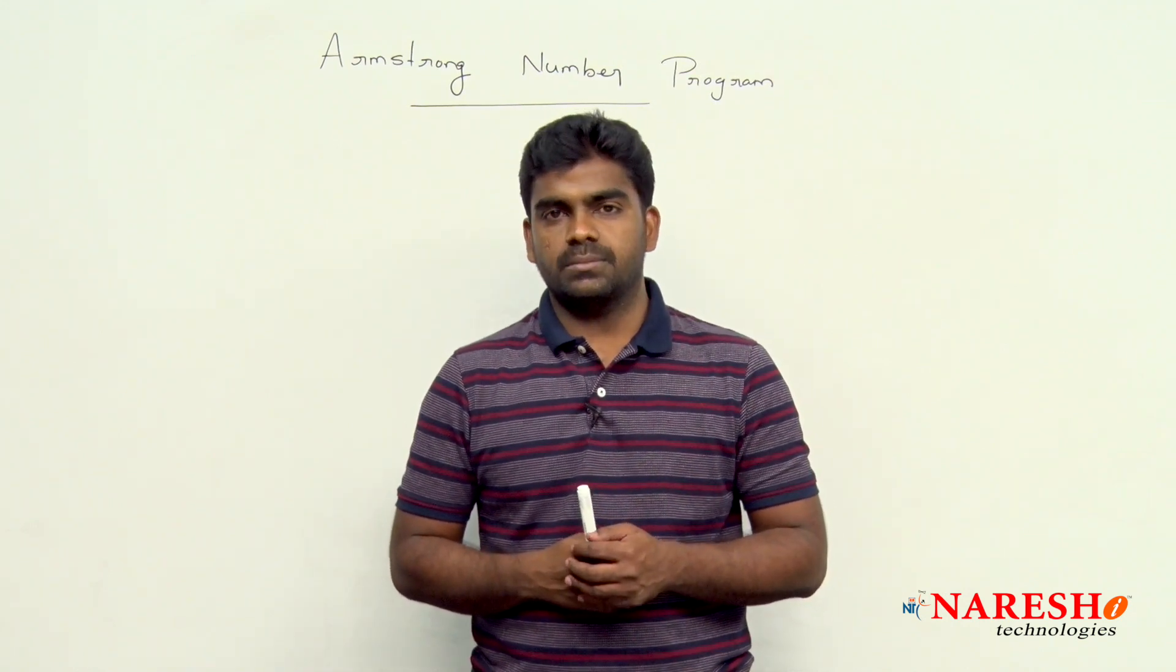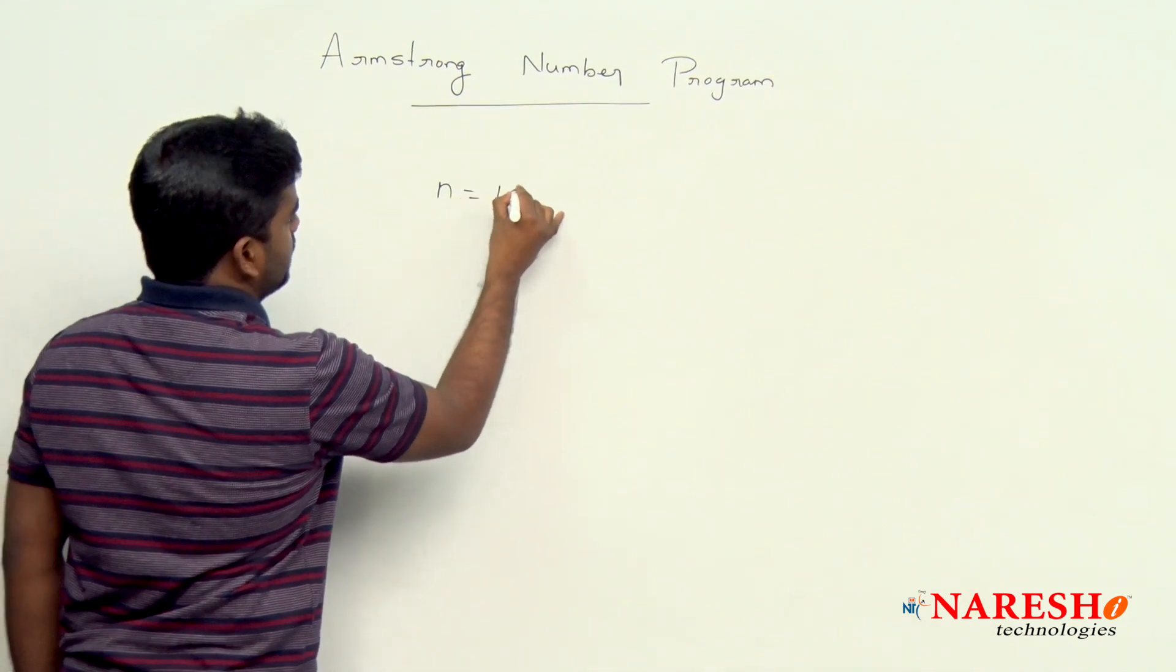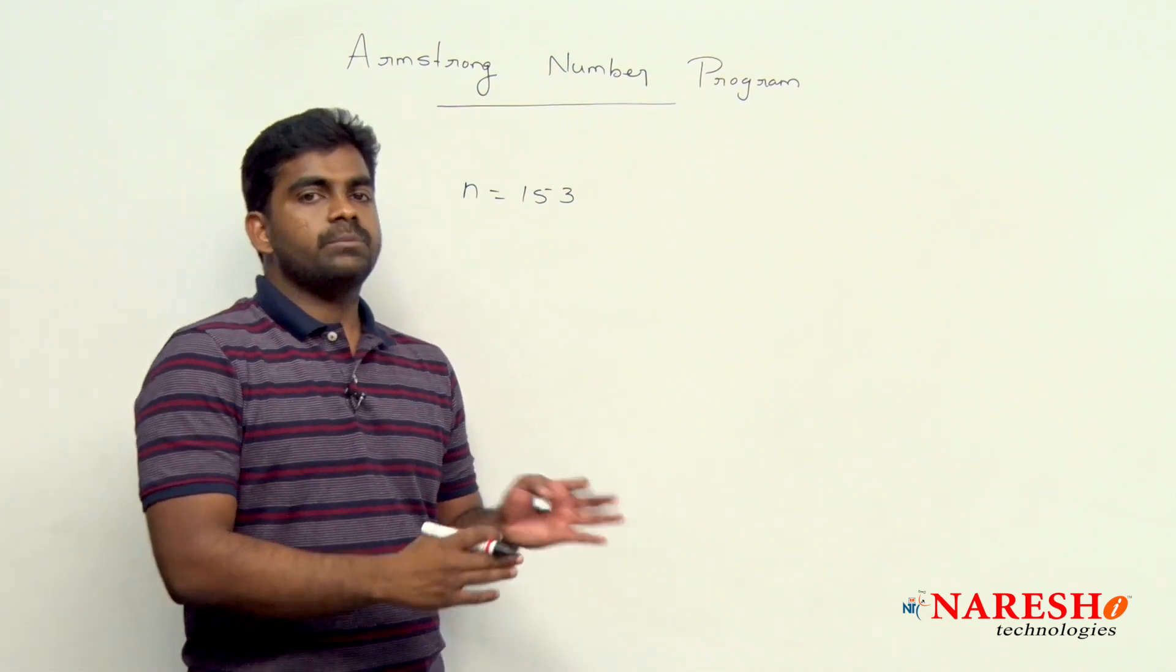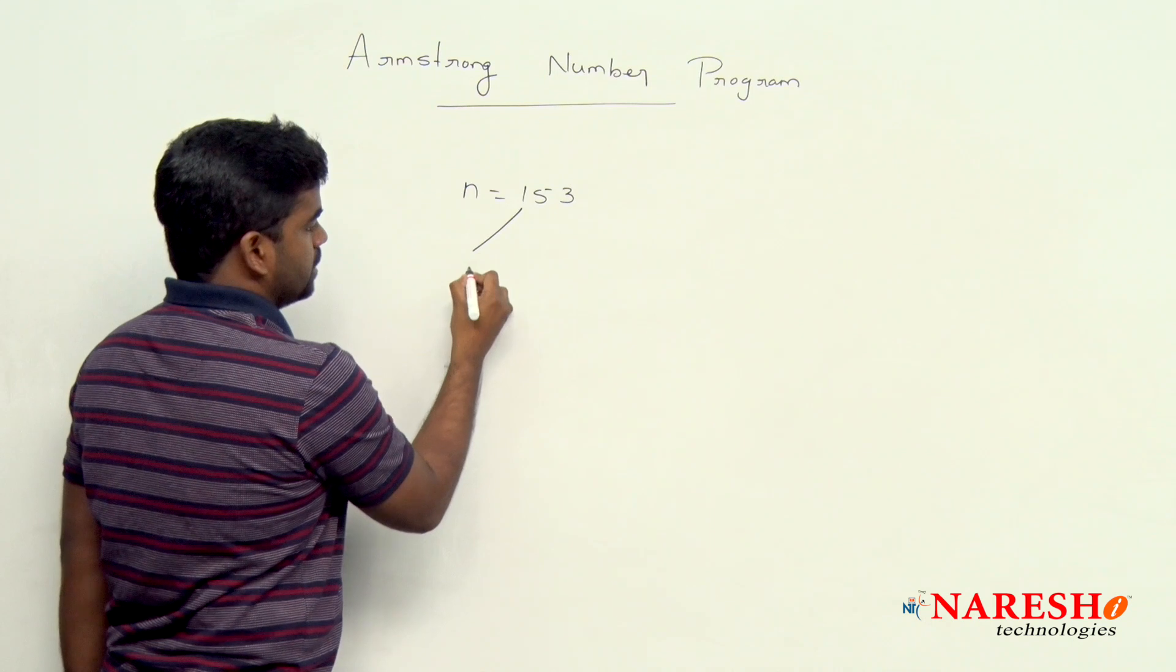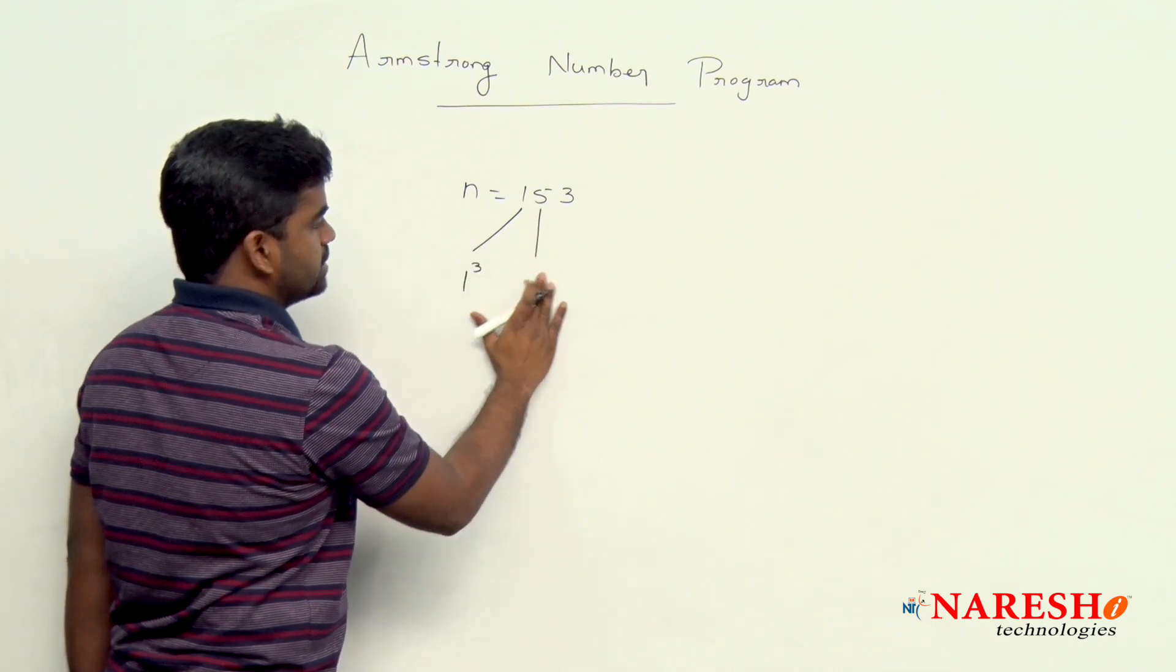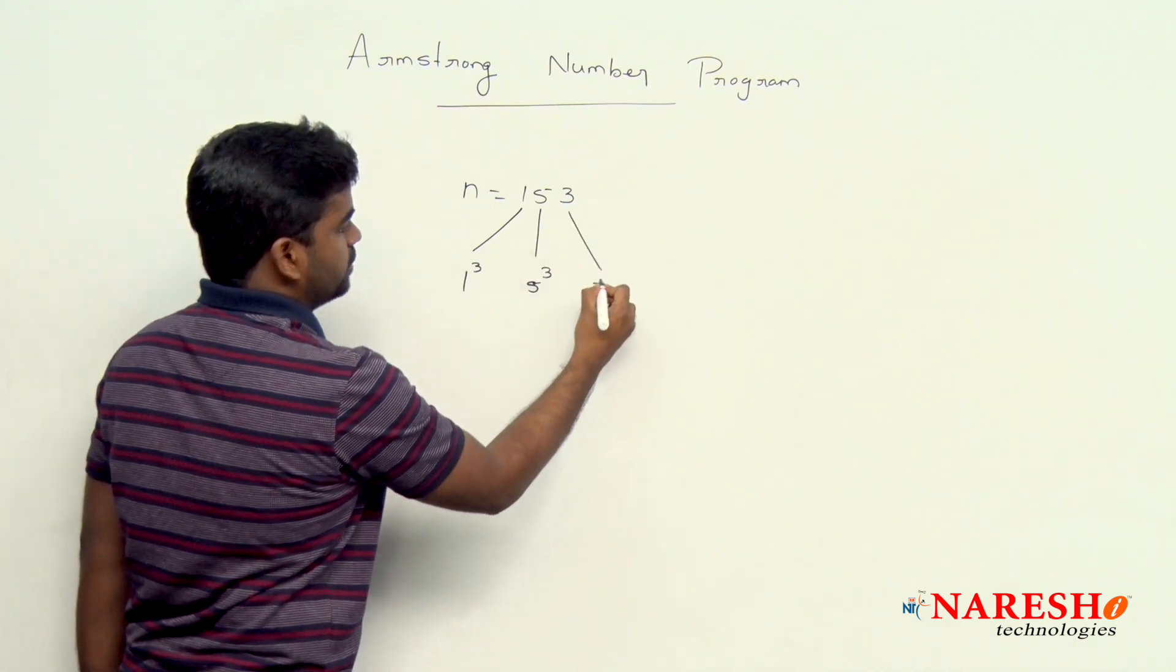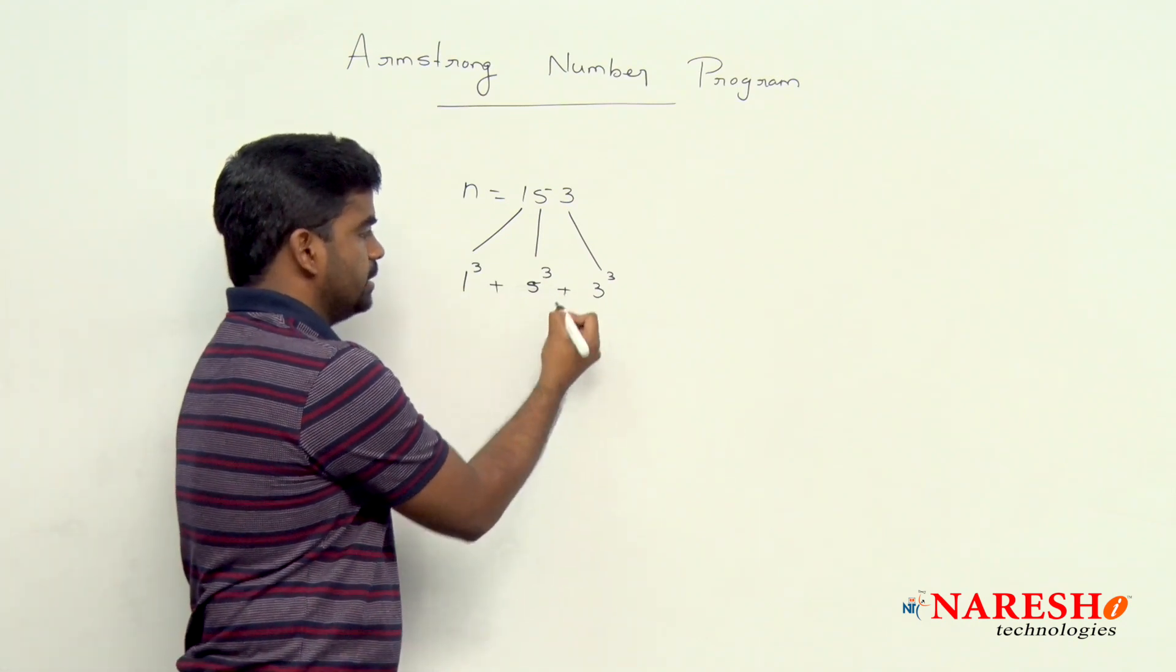First of all, what is an Armstrong number? I'll explain with an example. Suppose I consider one value 153, this is an Armstrong number. How does it become an Armstrong number? The first digit power 3, the second digit power 3, and the third digit power 3, just cubes. If you add them, then it is Armstrong.